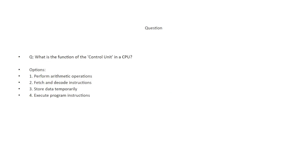What is the function of the control unit in a CPU? The options are: perform arithmetic operations, fetch and decode instructions, store data temporarily, and execute program instructions. The correct answer is fetch and decode instructions — that is the process of a CPU's control unit.